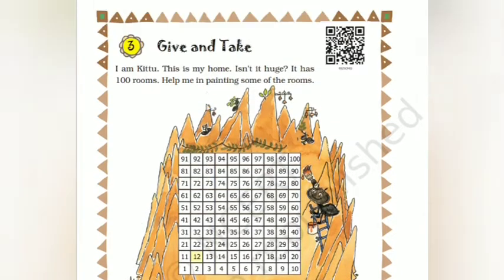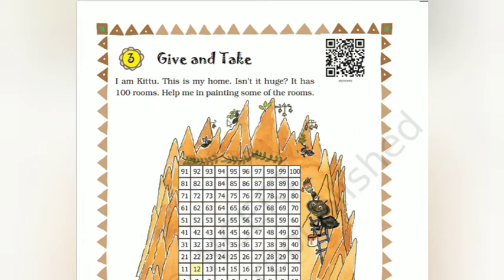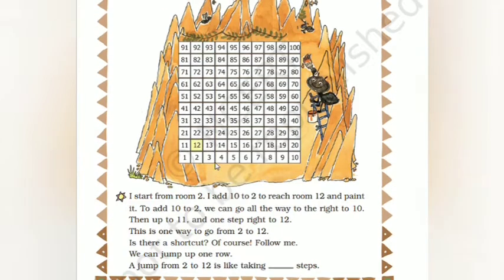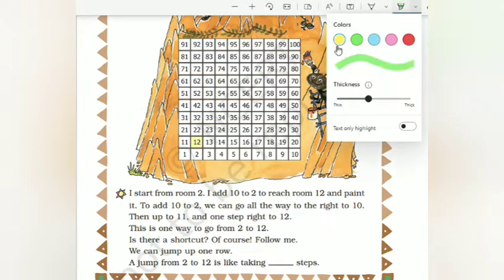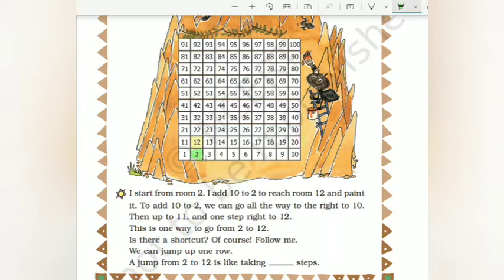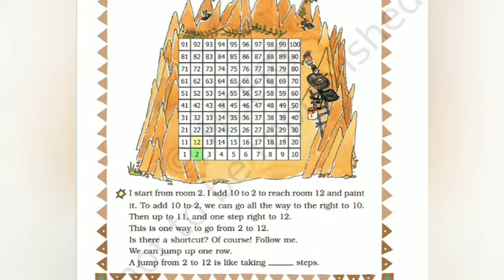We ask it to an ant. The ant has how many rooms? It has a hundred rooms. Help me in painting some of the rooms. What you have to do is help the ant paint some rooms. I start from room 2. Add 10 to 2 to reach 12. So it is starting from room 2.